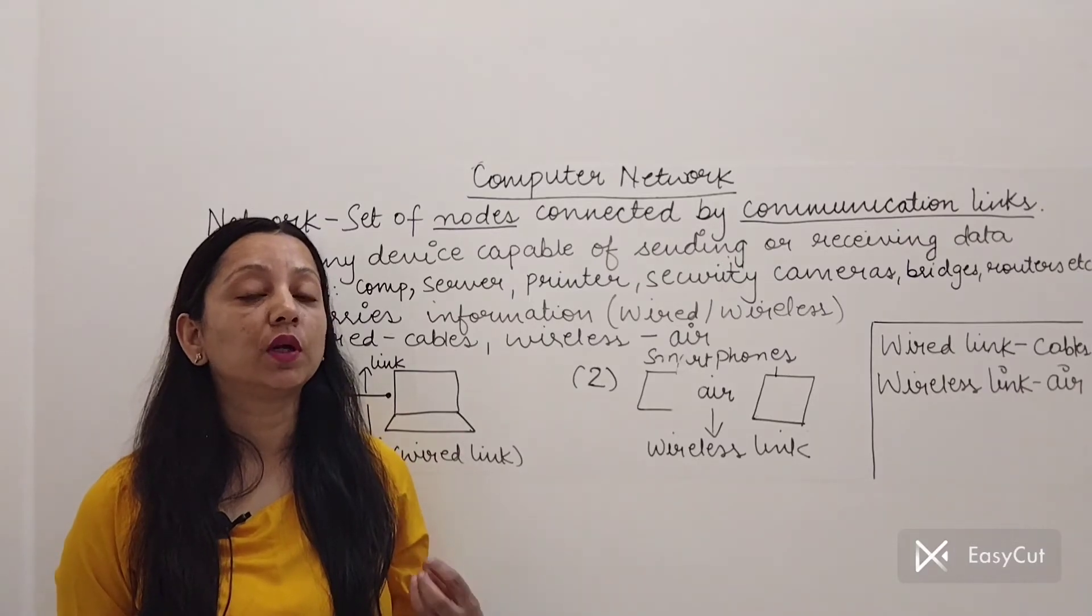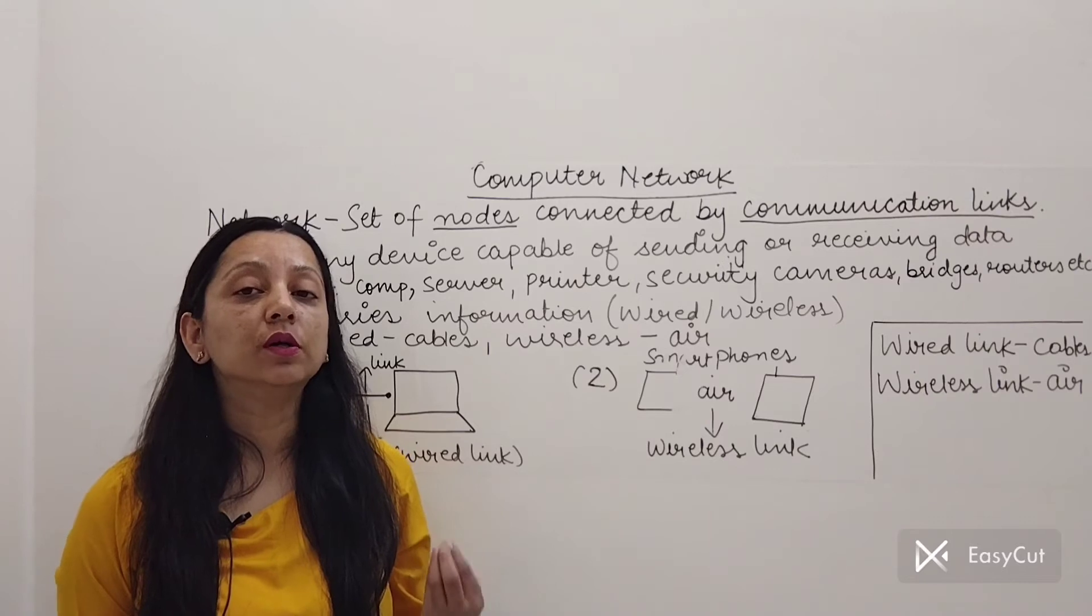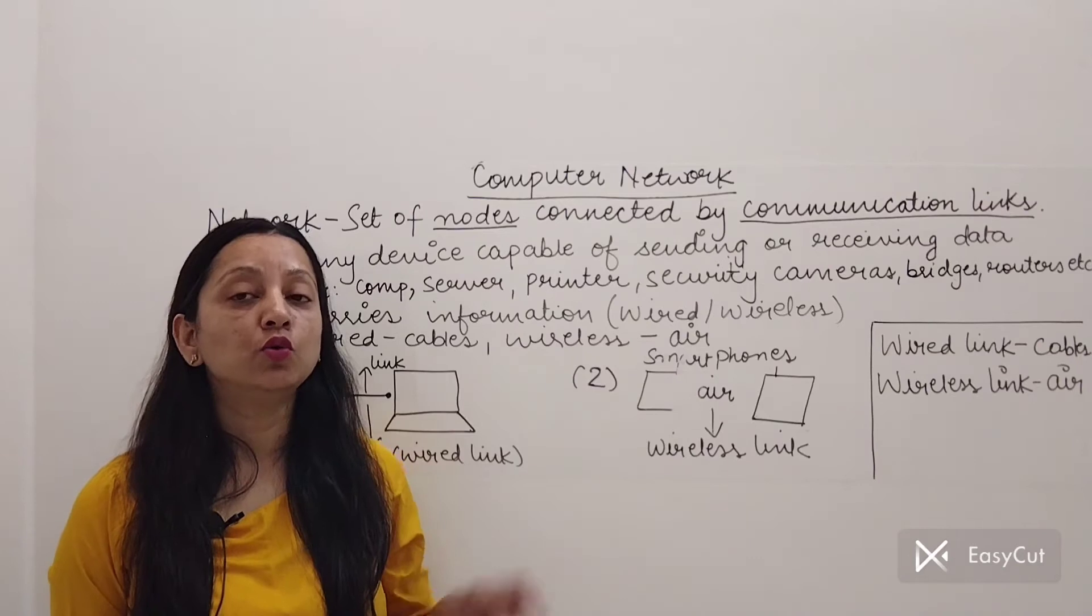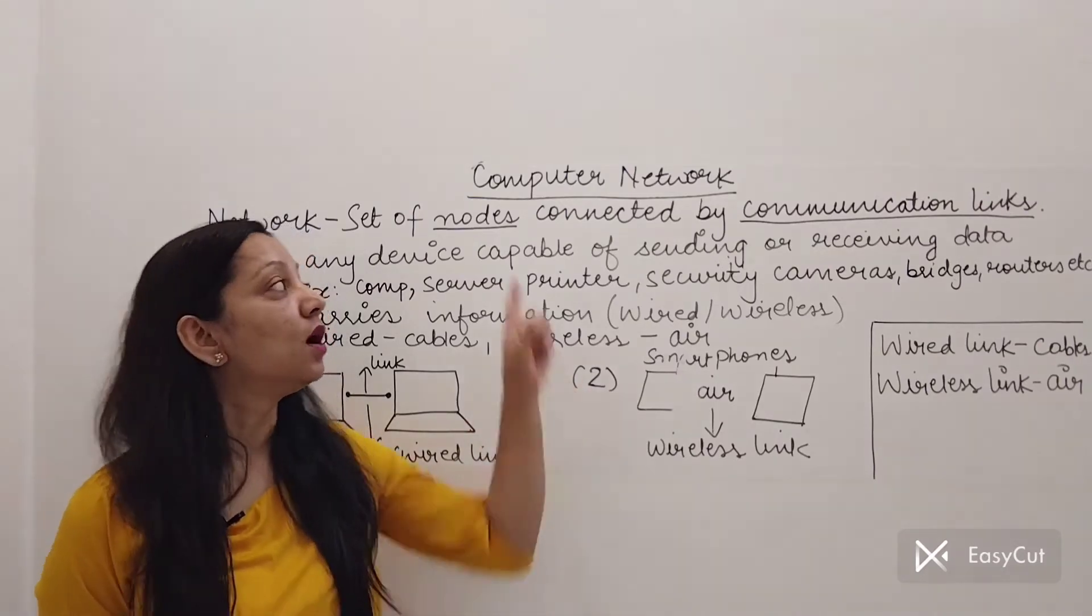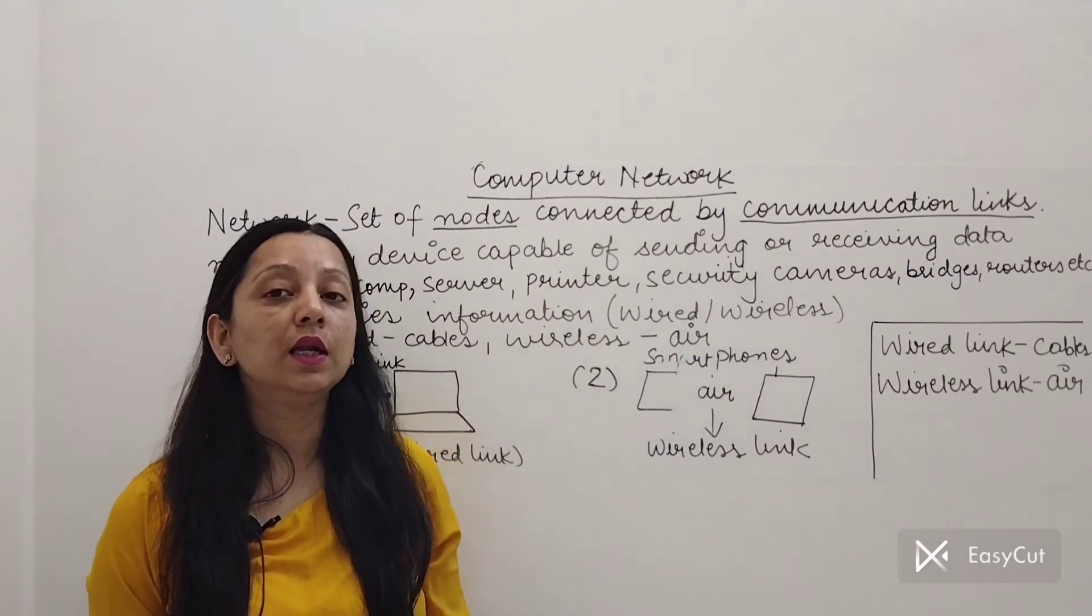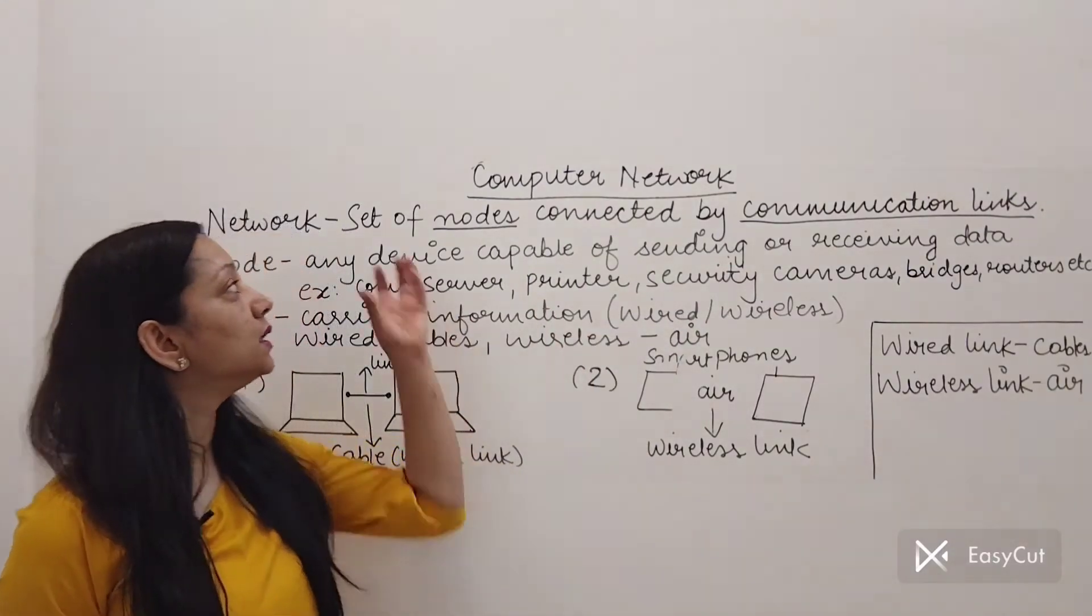So what are nodes and what is the communication link? So these are the two important terms related to a computer network. The entire network revolves around two most important things. One is your nodes and other is your communication links. So what is the node?